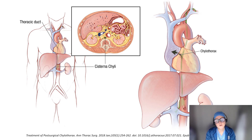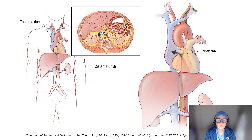Iatrogenic chylothorax ranges from 0.5 to 2 percent after esophagectomy and from 1.4 to 2.3 percent after lung resection. Although it's rare, chylothorax poses a difficult problem because it can lead to immunologic compromise, pneumonias, and death — in some series up to 30 percent of patients.